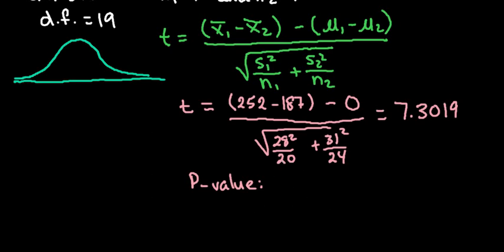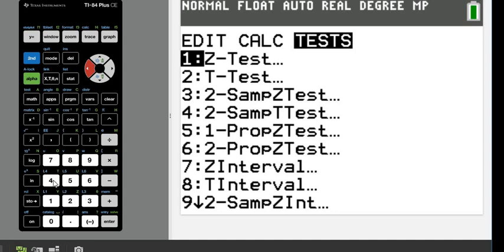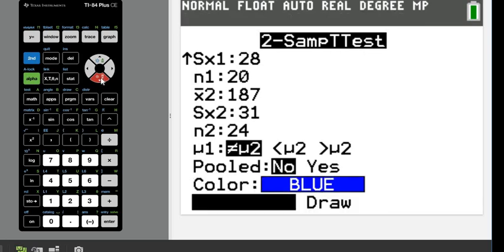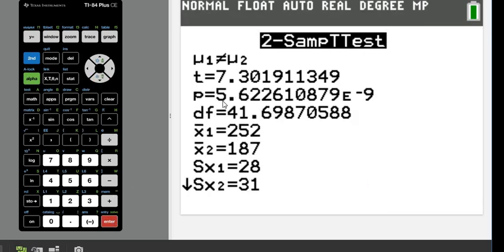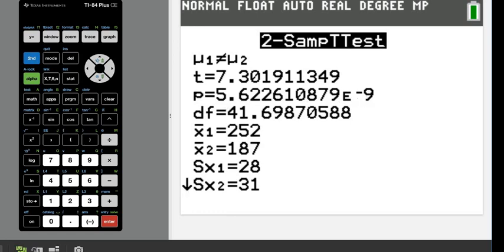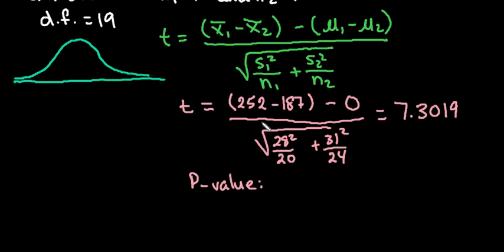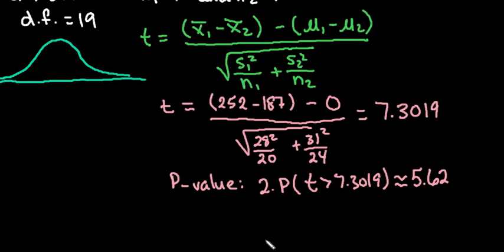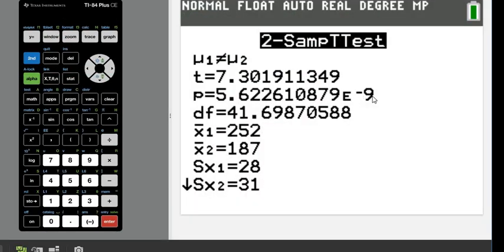From running it in the calculator the first way, I'm going to go back — STAT, TESTS — and run it again, but this time instead of drawing it, I'm just going to hit calculate. This will also give me the values. Notice this time it gives me 5.6e-9. So the p-value is twice the probability of this occurring, meaning our t-value being greater than 7.3019. If you wanted to write this out, this is really 2 times the probability that t is greater than 7.3019, which ends up being approximately 5.62e-9.